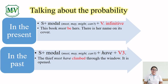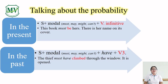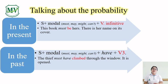Let's summarize what we have learned today. We have learned how to use modals of deduction and probability in guessing about the present and future, and in guessing about the past. When guessing about the present and future, form a sentence: subject followed by modal and verb infinitive. For example: 'This book must be hers — there is her name on its cover.' When guessing about the past, use: subject followed by modal and helping verb 'have,' followed by past participle. For example: 'He must have climbed through the window — it is open.'